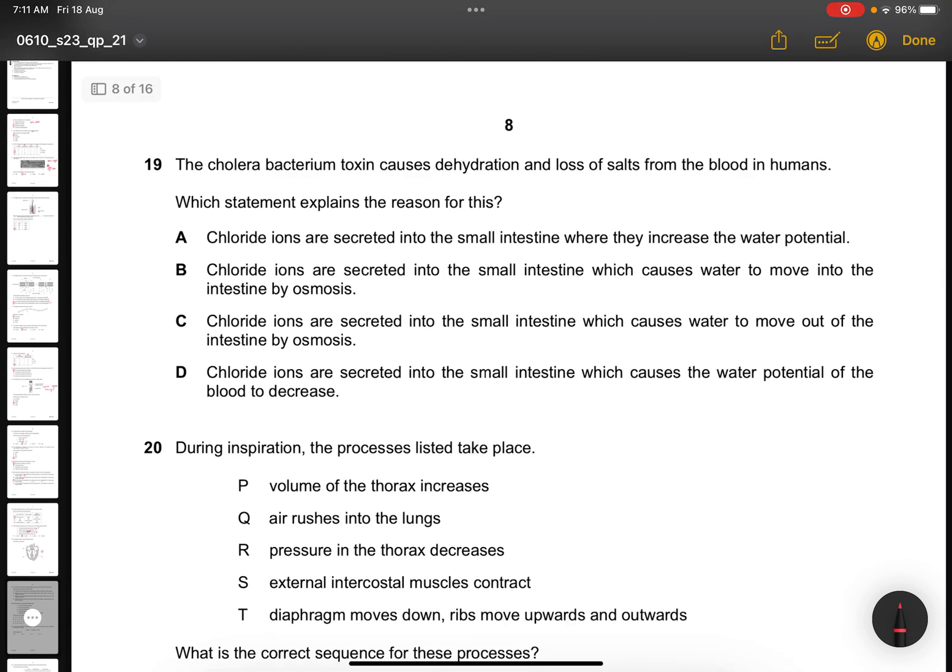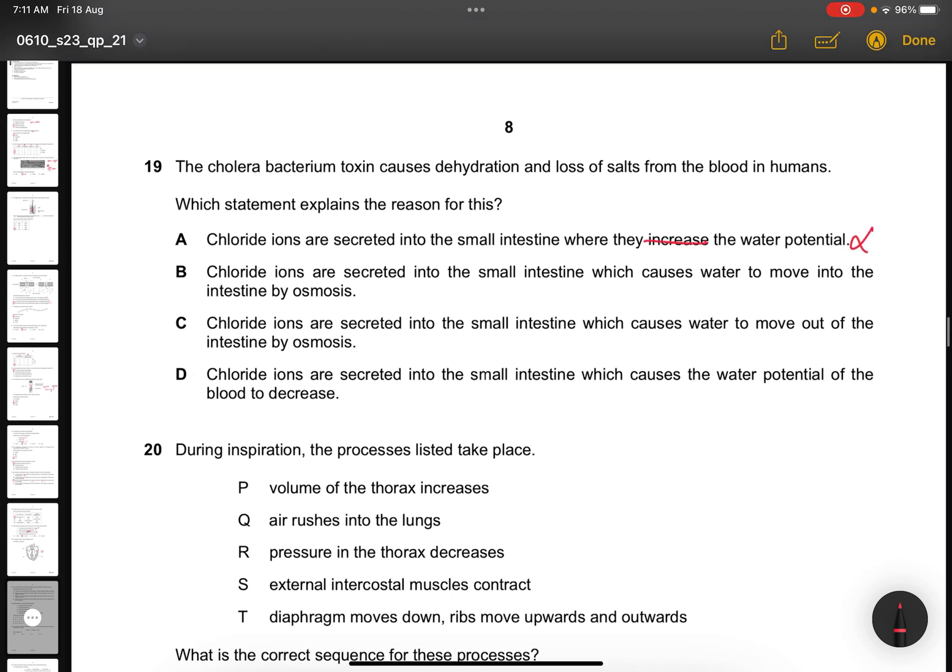Question 19. The cholera bacterium toxin causes dehydration and loss of salts from the blood in humans. Which statement explains the reason for this? Let's read every answer. Chloride ions are secreted into the small intestine where they increase the water potential? No, they actually decrease the water potential.